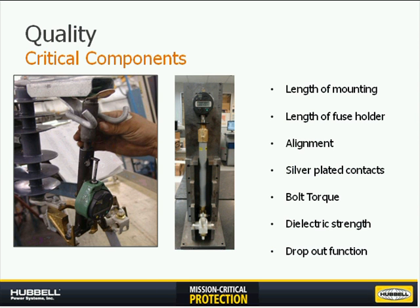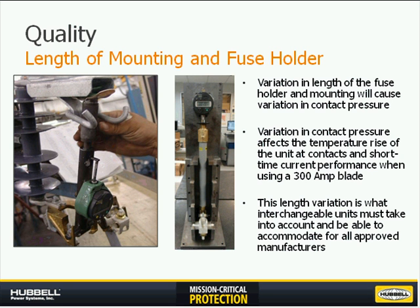The first two critical components we're going to discuss are the length of the mounting and the fuse holder. As you can see in the leftmost photo, this is a gauge tool used to check what we call the gauge length of the mounting — the distance from your rotation point in the hinge (your bottom brass or bottom aluminum bronze component) to the silver plated top contact. This is where the standard interchangeable fuse holder engages. Maintaining this length is what allows you to perform in momentary testing with a 300 amp blade, and gives you your contact pressure to maintain low temperature rise during 300, 200, or 100 amp continuous current operation.